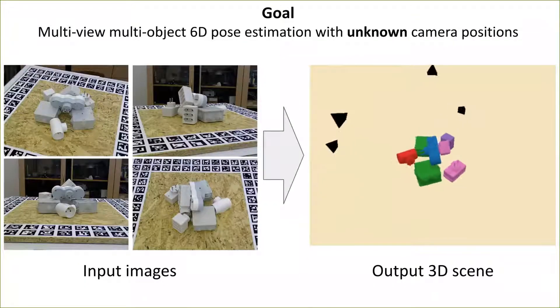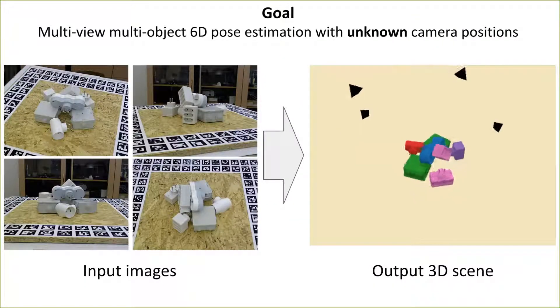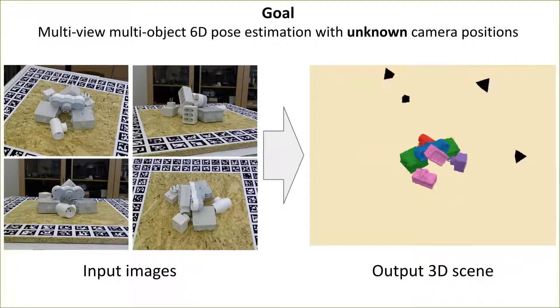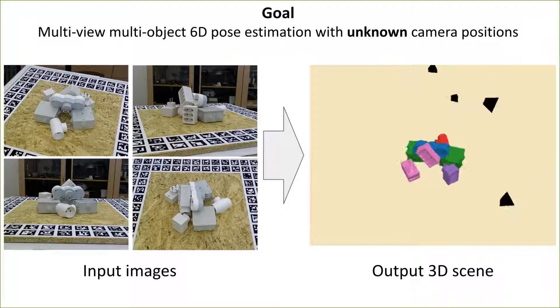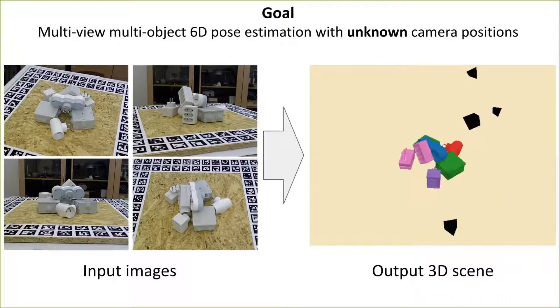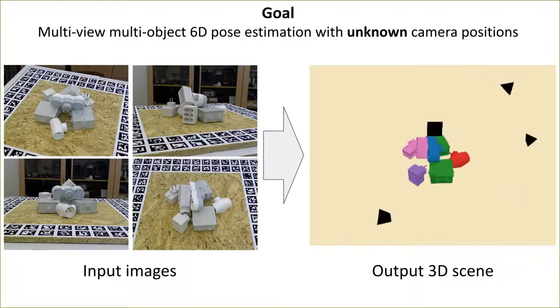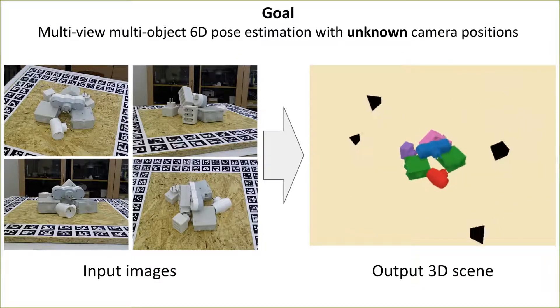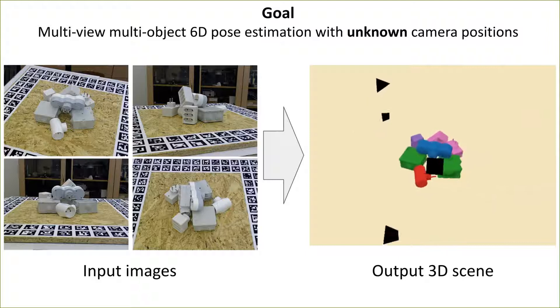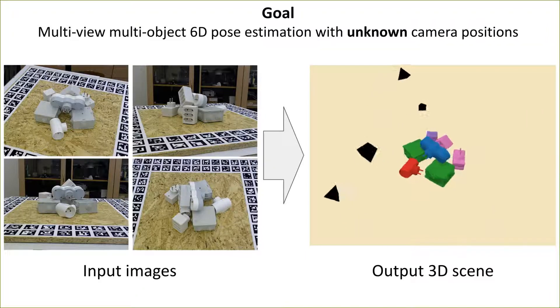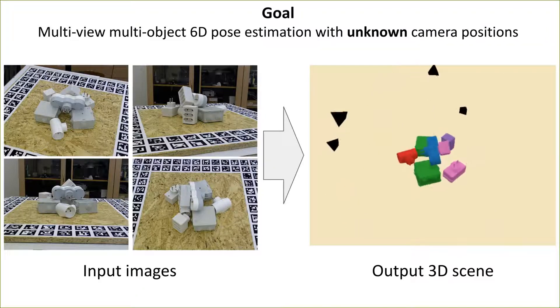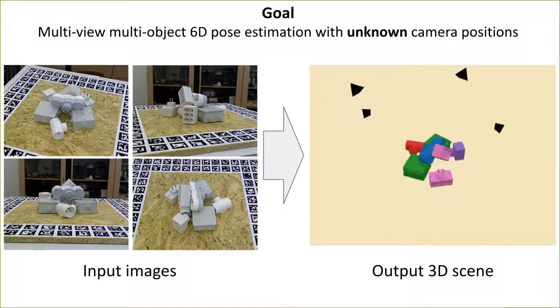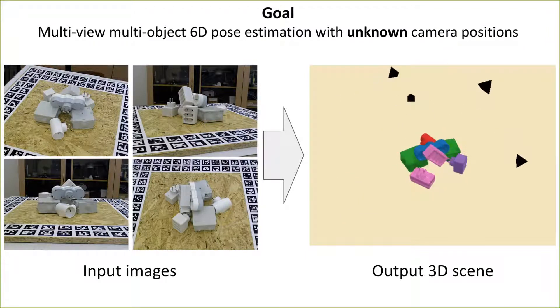We address the problem of multi-view multi-object 6D pose estimation. Given a set of input RGB images captured from cameras with unknown viewpoints, the goal is to identify all the objects in the scene and recover their 6D pose.